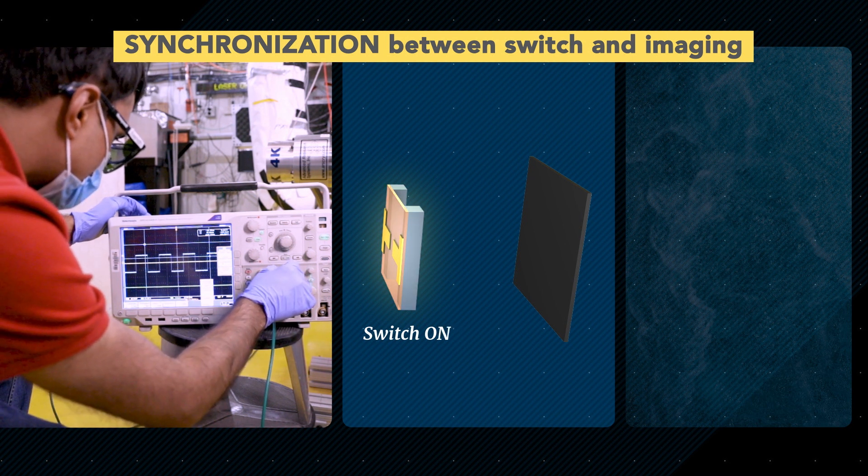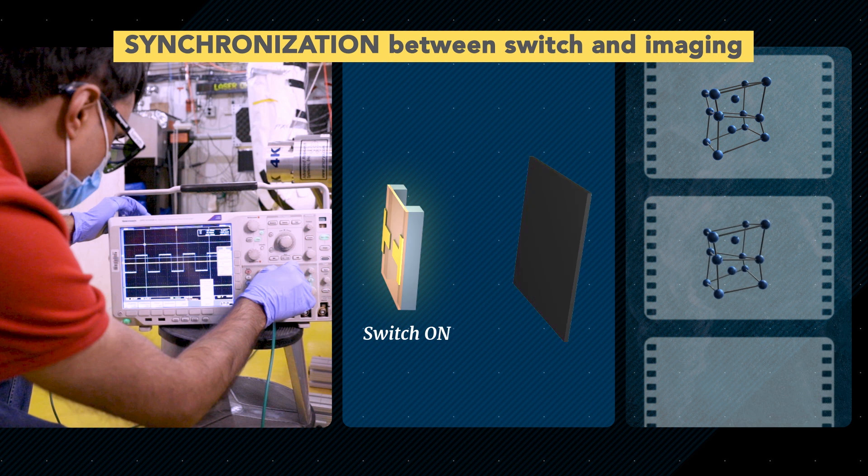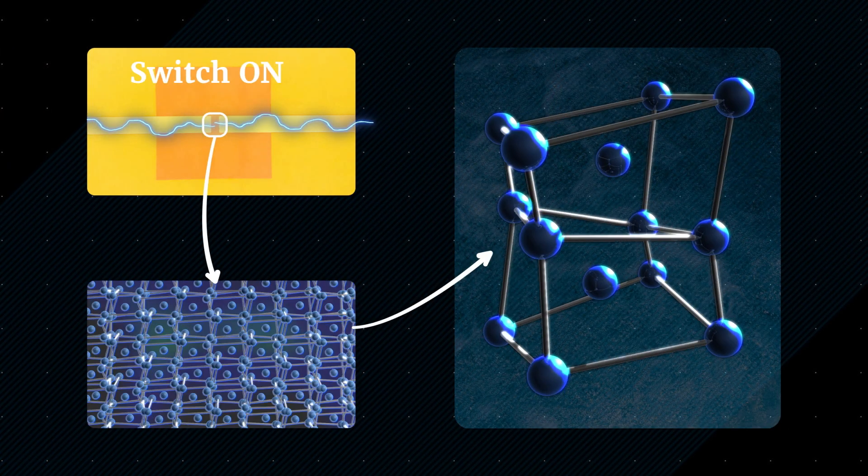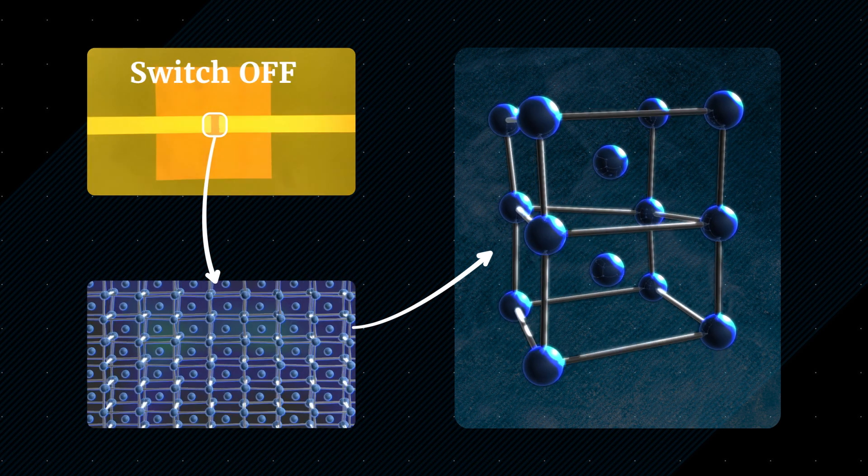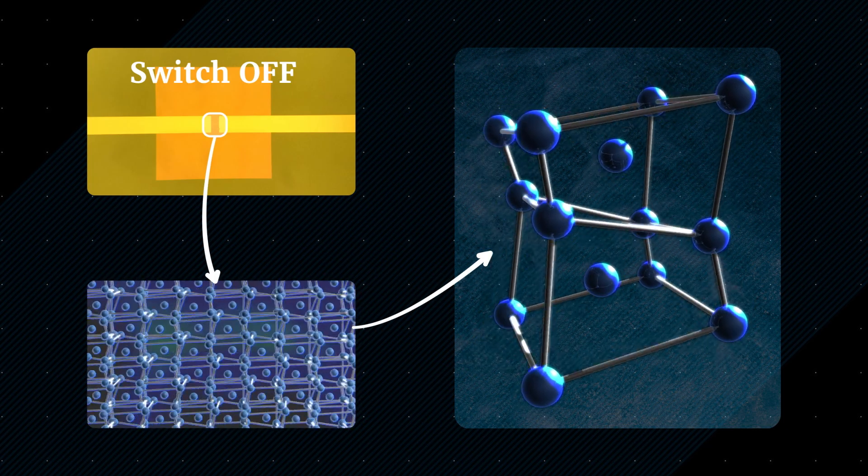We cycle the switches on and off several times, each time taking a snapshot of the atomic structure at a different point in the device's cycle. And we end up with an ultrafast stroboscopic movie of the atoms moving inside the electronic device on timescales of a few billionths of a second.